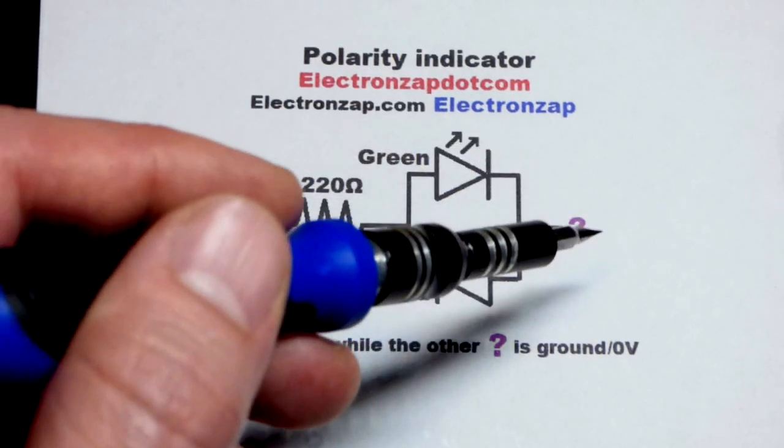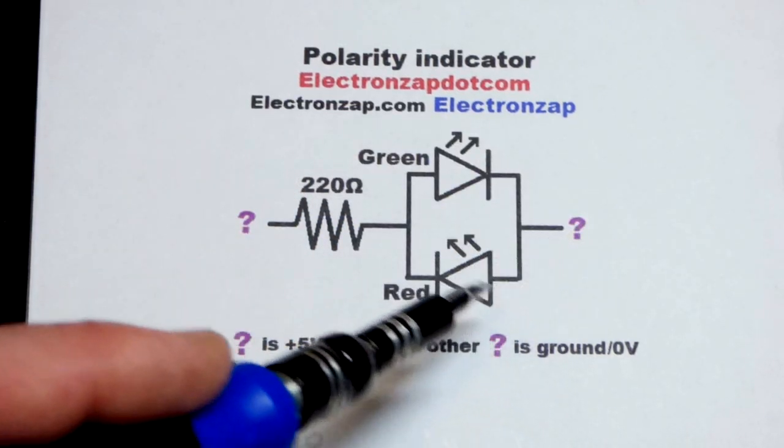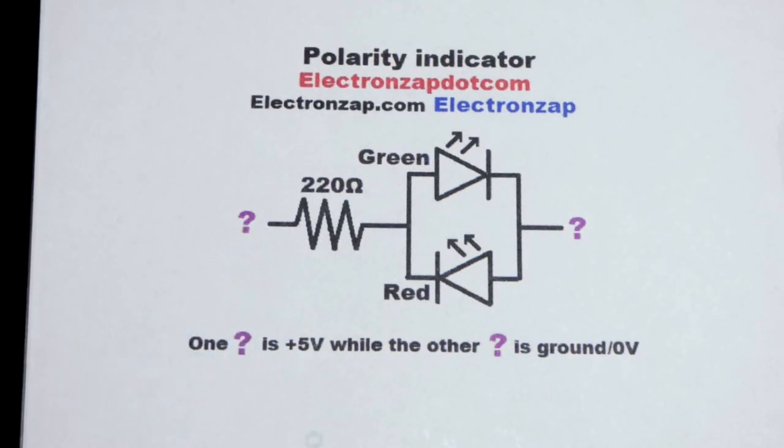When this side is more positive the green LED will light up. When that's the more positive side, the red alligator clip, the red LED will light up. That's the main takeaway.